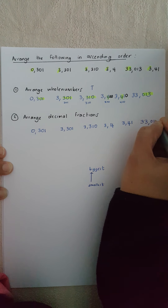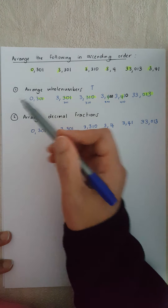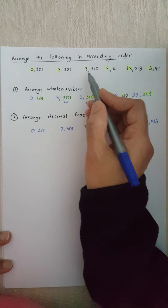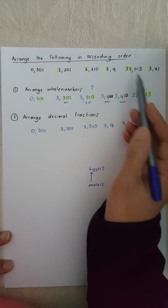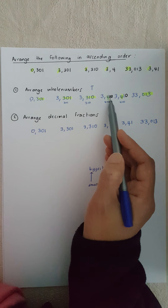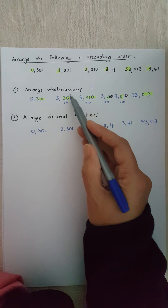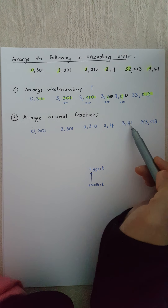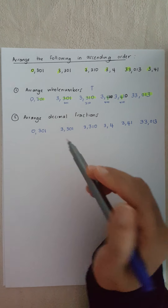My last number would be 33,013. Let's recap what we've done: first we look at all the whole numbers and arrange them in ascending order — zero is lowest, then we have a few threes, and then 33 is last because it's the biggest. Then we arrange the decimal fractions — I added zeros to make them all have three decimal places so I can compare them. Then I look at the decimal part and arrange from smallest to biggest: 301, 310, 400, and 410. That's the question arranged in ascending order.